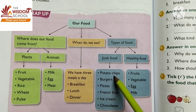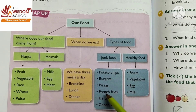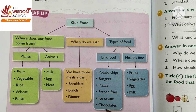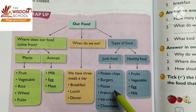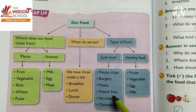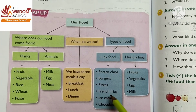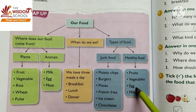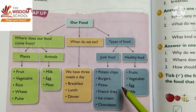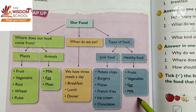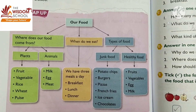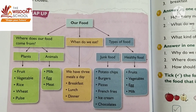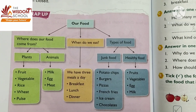Junk food includes potato chips, burgers, pizzas, french fries, ice cream, and chocolates — these are all junk food, which we don't want to consume too much because it is not good for our health. Healthy food includes fruits, vegetables, eggs, and milk — these are all healthy food items. Read this chapter properly. Thank you and goodbye.